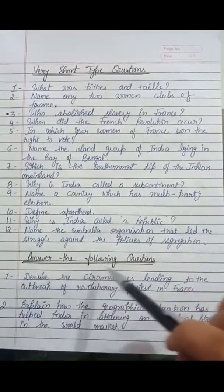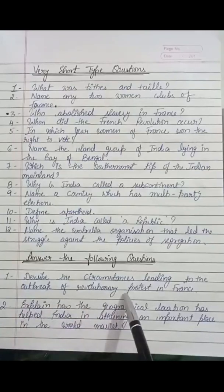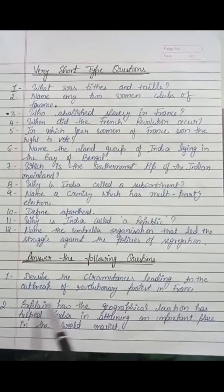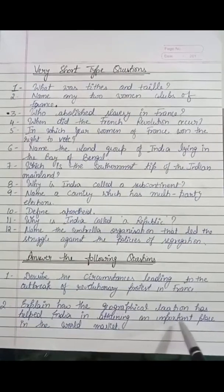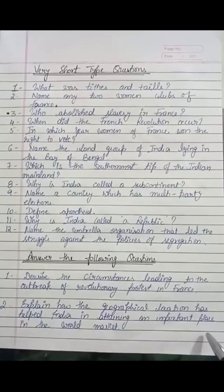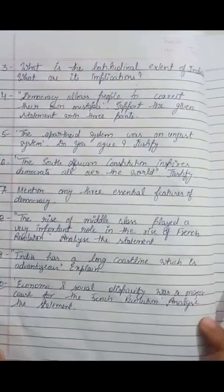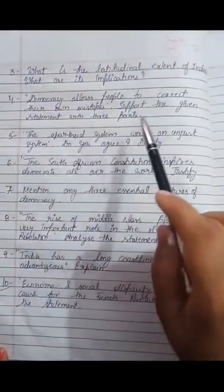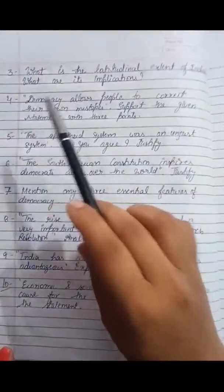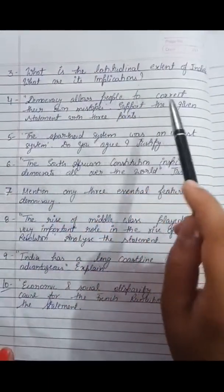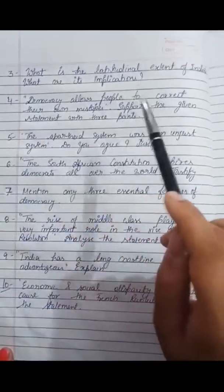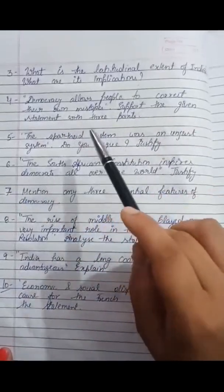Some of the long questions are: First, describe the circumstances leading to the outbreak of revolutionary protest in France. Second, explain how the geographical location has helped India in attaining an important place in the world market. Third question: what is the latitudinal extent of India and what are its implications? Fourth: democracy allows people to correct their own mistakes — support the given statement with three points.